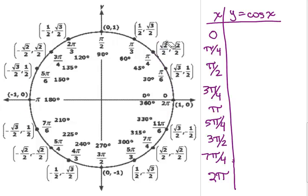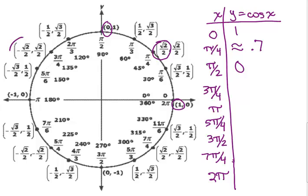So let's look at these x coordinates for each of these values of x. When x is 0, the x coordinate is 1. When x is pi over 4, the x coordinate is square root of 2 over 2 — that's irrational, but we can approximate that to 0.7. At pi over 2, the x coordinate is 0. At 3 pi over 4, the x coordinate is negative square root of 2 over 2, so that is approximately negative 0.7.